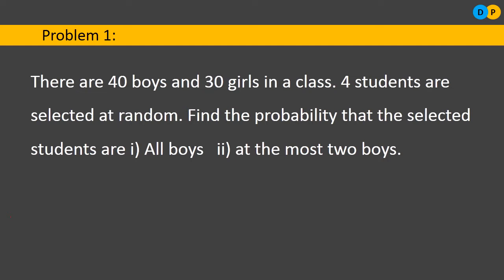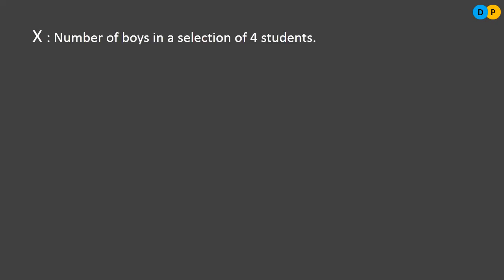All 4 should be boys — that is the first probability. The second is at the most 2 boys, meaning the maximum we can have is 2 boys in those 4 selected students. So let us define the random variable X. X indicates the number of boys selected in a selection of 4 students. X can take values 0, 1, 2, 3, or 4.